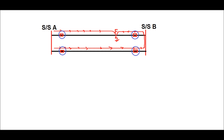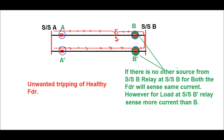A fault occurs at a point very close to substation B. The fault current will flow as shown in this diagram. Now if there is no other source from substation B, the relay at substation B for both feeders will sense the same current. However, for the load at substation B', the relay senses more current than substation B.